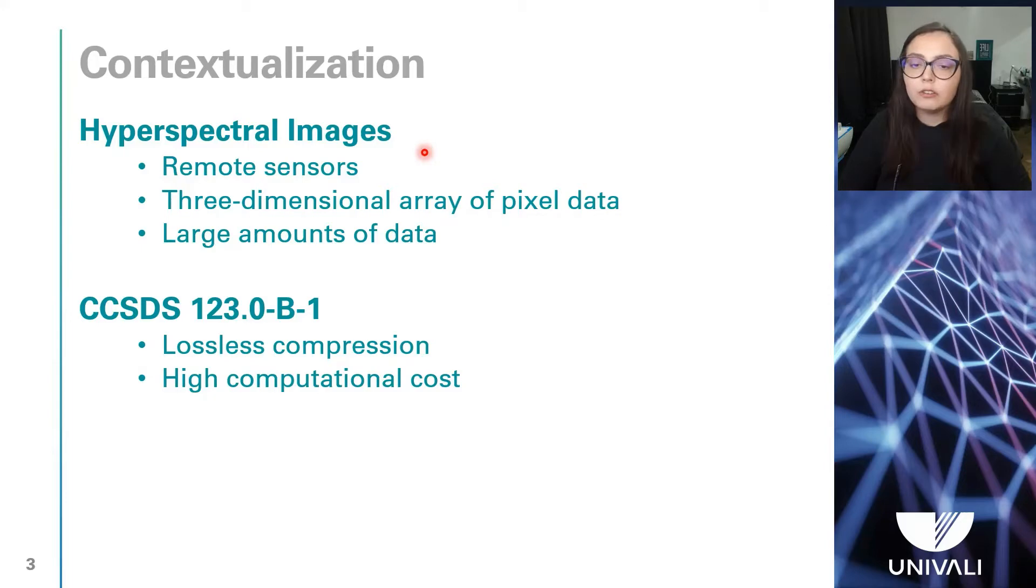Hyperspectral image is a type of image that is captured by these sensors, and it is a three-dimensional array of pixel data where each layer is an array representing a single band of the image. Usually, these images contain several dozens to hundreds of spectral layers, which causes hyperspectral image sensors to capture large amounts of data.